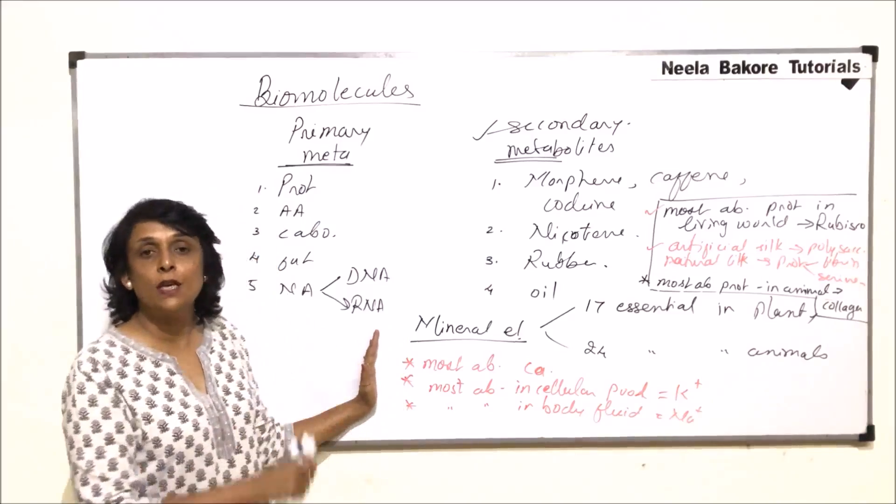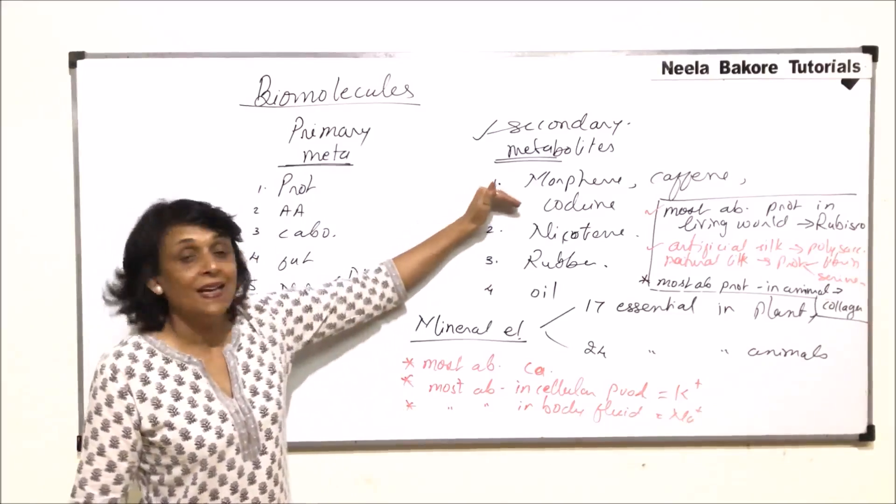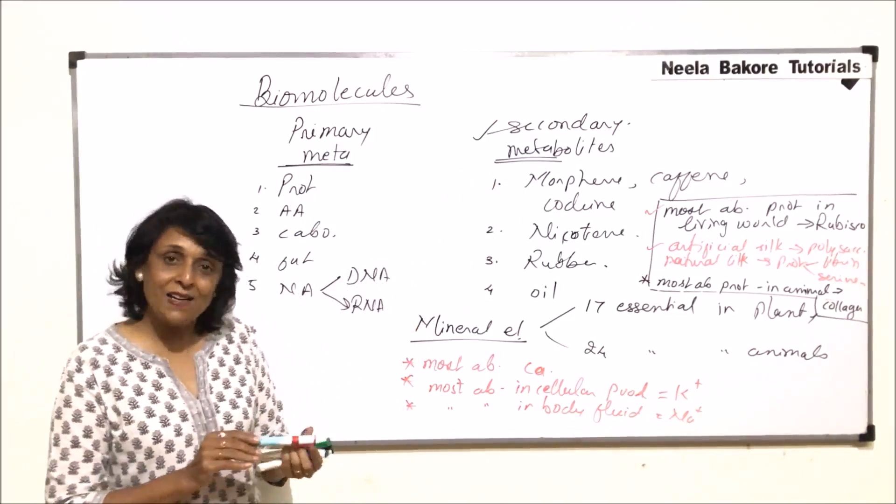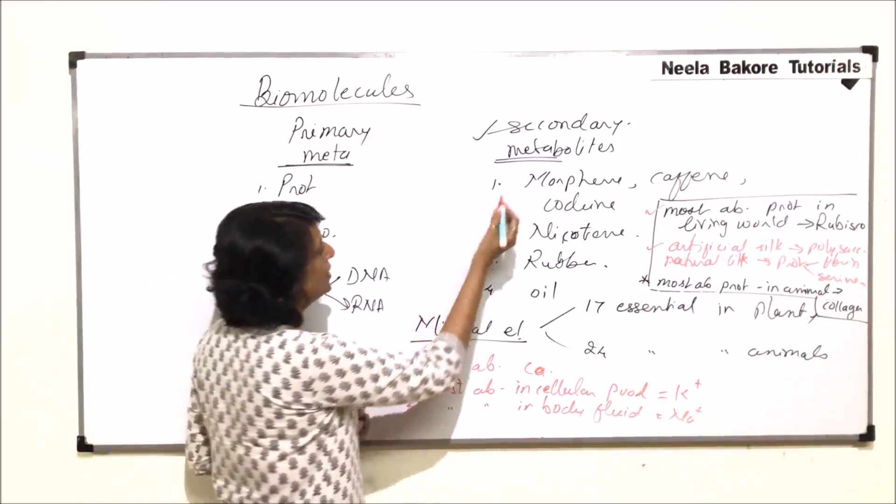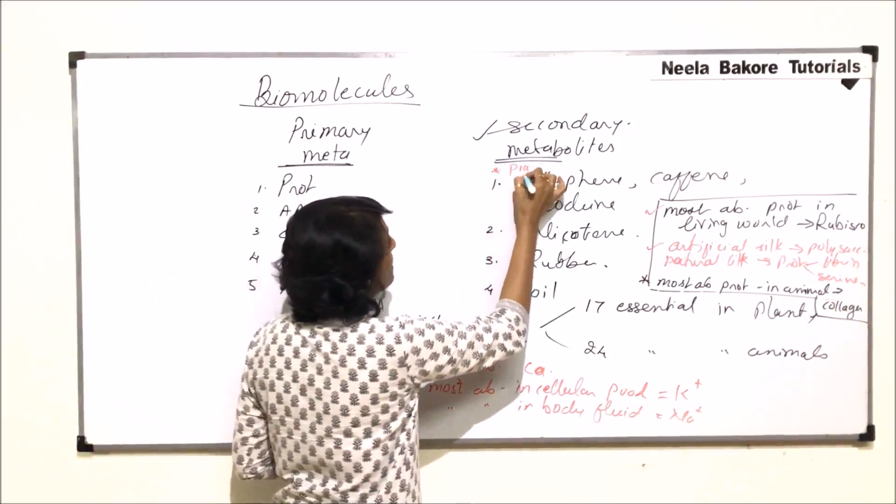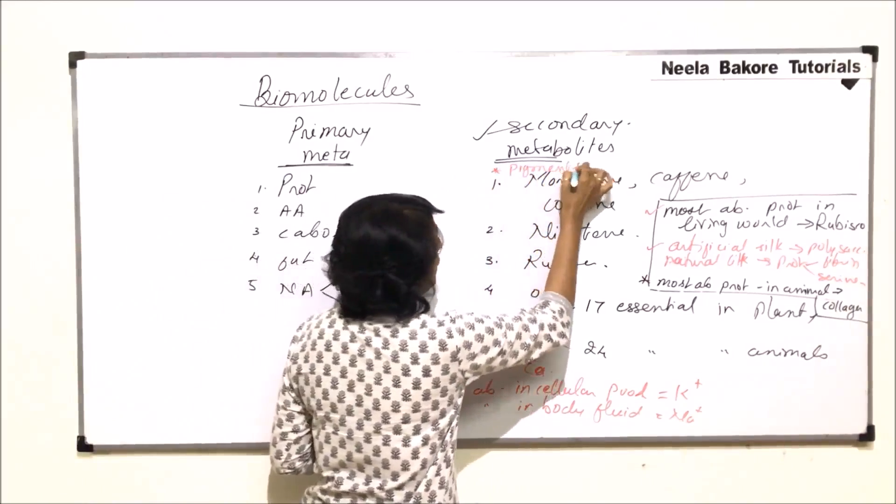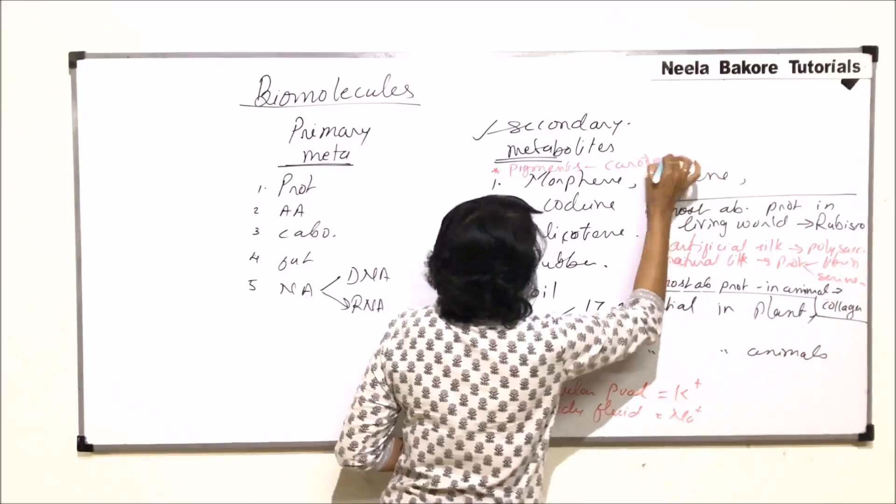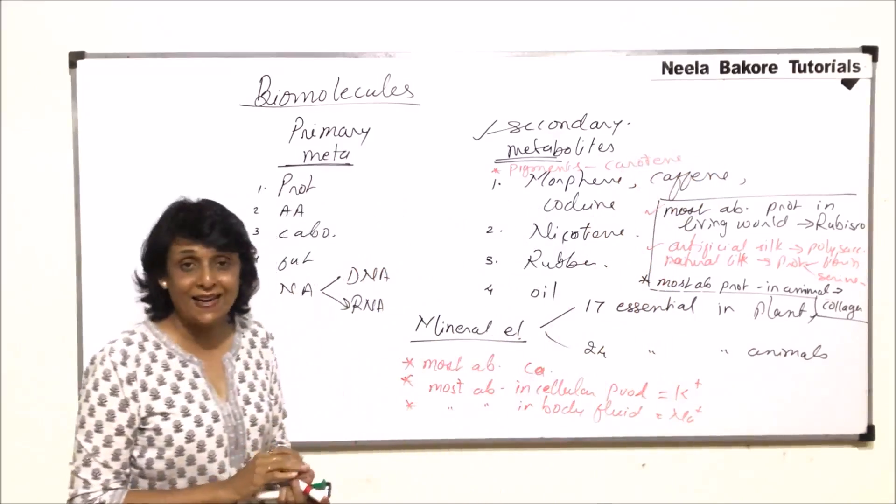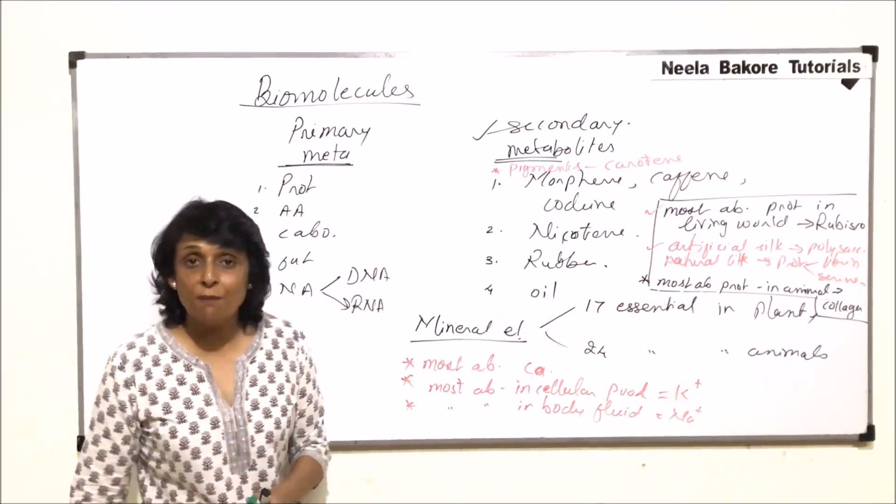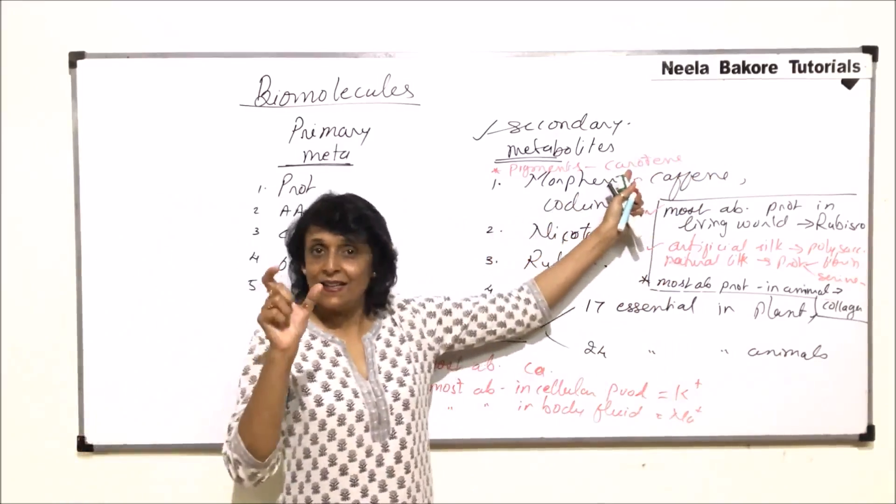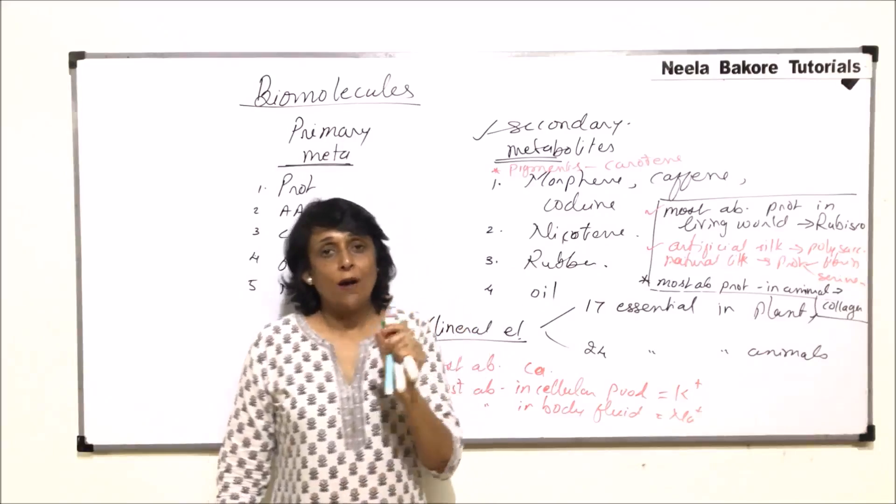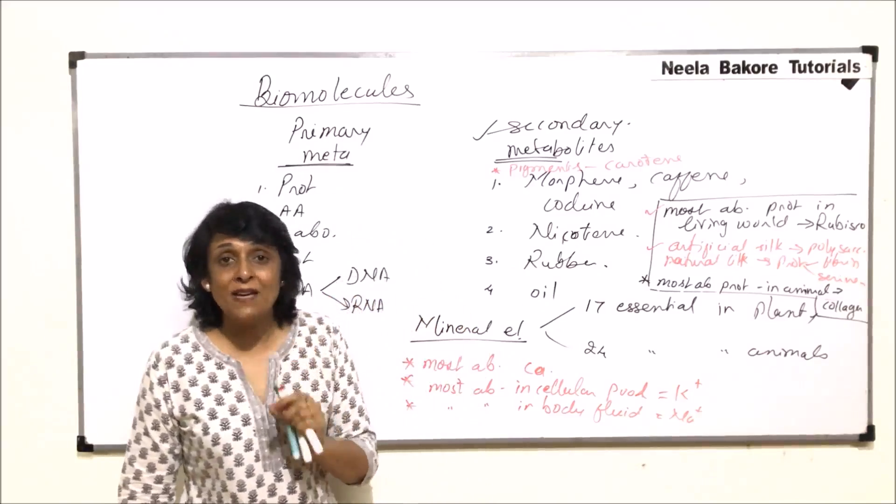Secondary metabolites, we don't know their role. We can add one more secondary metabolite. There are certain pigments. For example, carotene. We know carotene is present in carrot. It is a reddish, orangish-red pigment. And carrot, the color of carrot is because of this carotene. Now, what is the role of a pigment, basically?